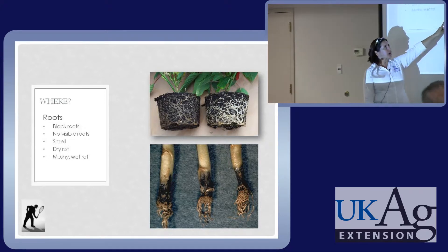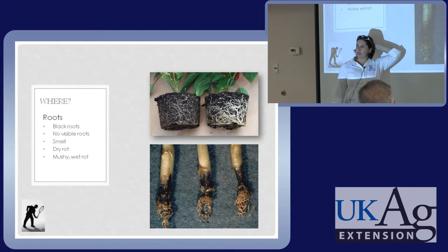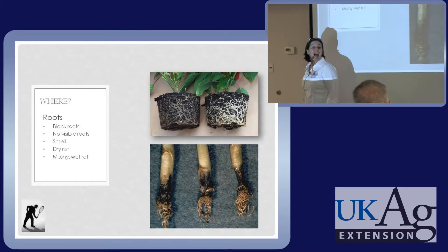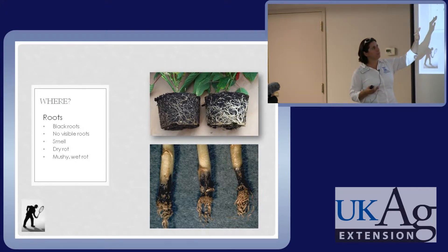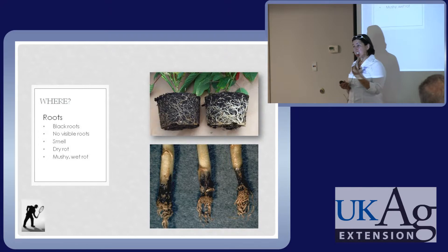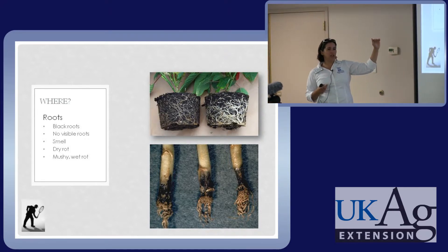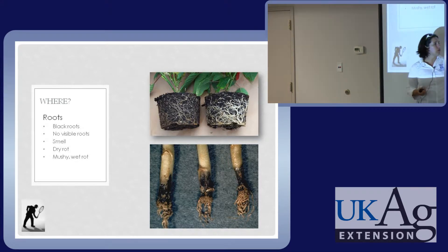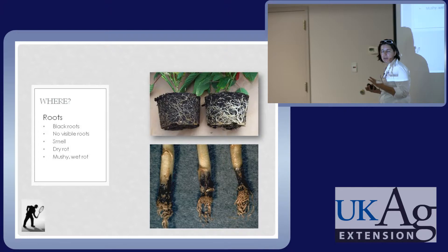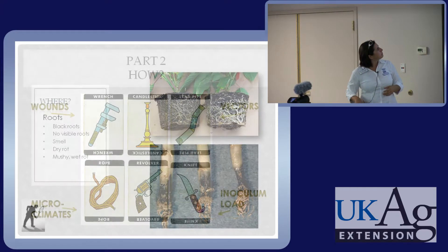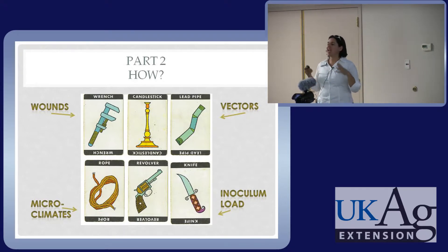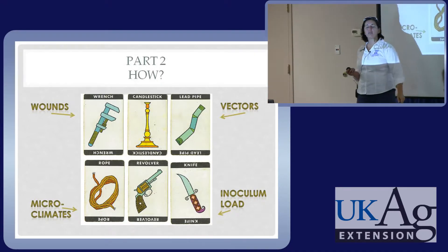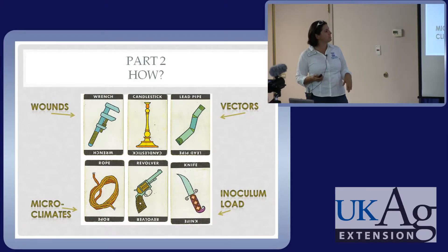With Phytophthora root rot in a container, your roots are going to be black, mushy, and stinky — you're going to smell them. Black root rot also causes black roots, but Phytophthora and other water molds are mushy and wet. If you're having plant collapse, pop the plant out of the container and take a look. Even in the landscape, digging up herbaceous plants and checking whether the root system is reduced is essential. Next, how does infection happen — through wounds, microclimates, insect vectors, or high inoculum load?